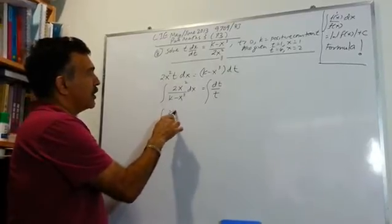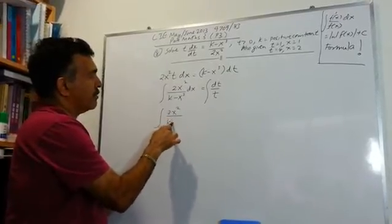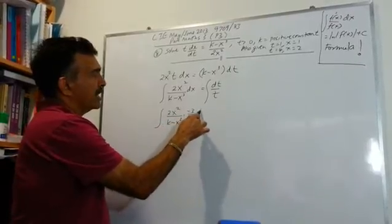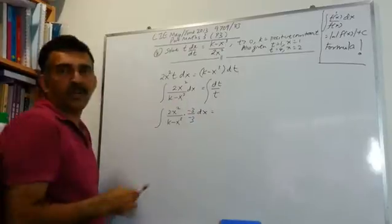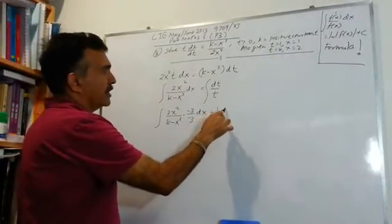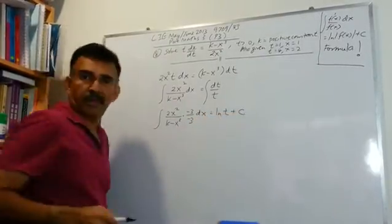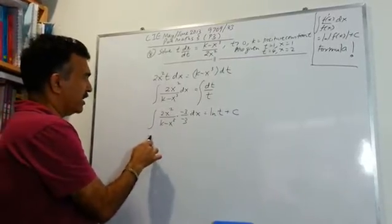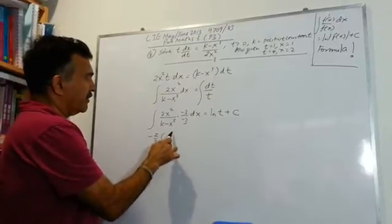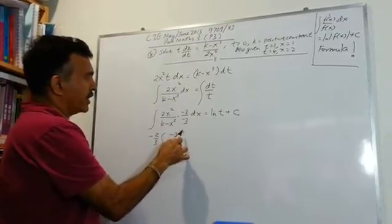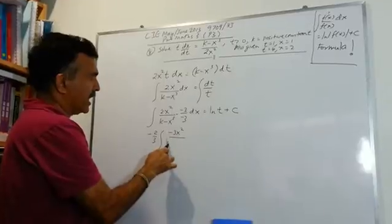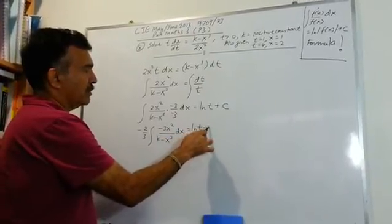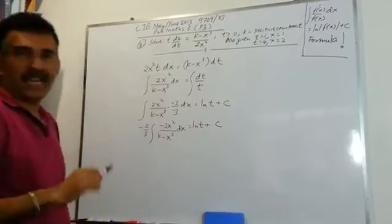So I have 2x² over (k - x³). Let's multiply top and bottom by -3. The right side we can write as ln t straight away. Don't forget the c. Now let's clean up the left hand side. I have minus 2 over 3, and then minus 3x² over (k - x³) dx equals ln t + c.